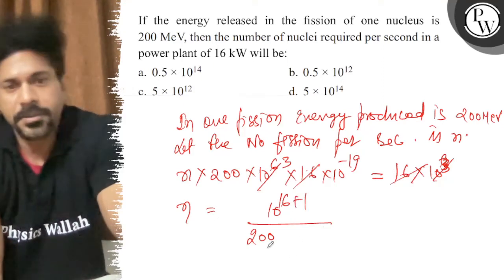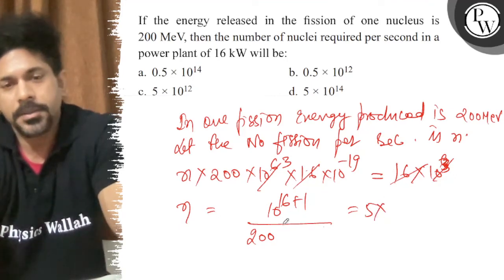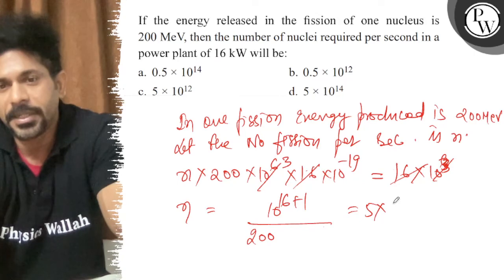1.6 divided by 200, that is 5 into 10 power 17, 15 and 10 divided by 200.